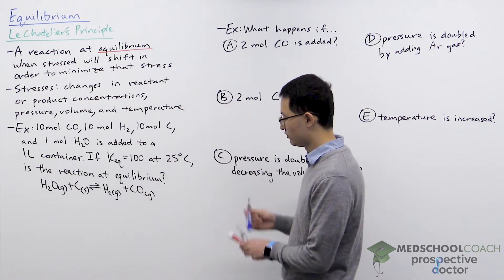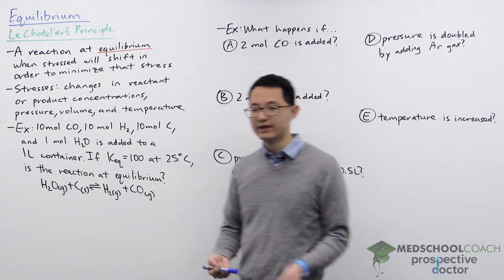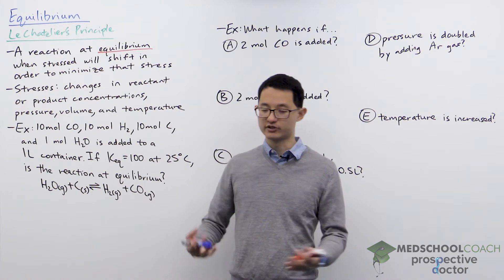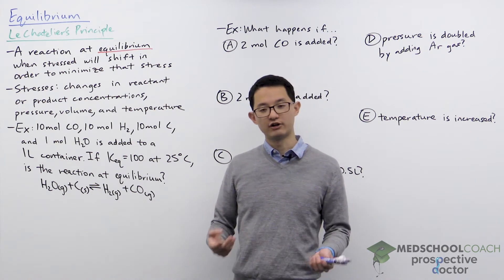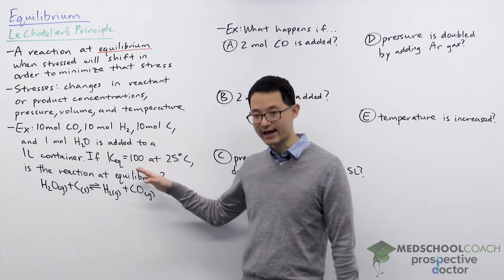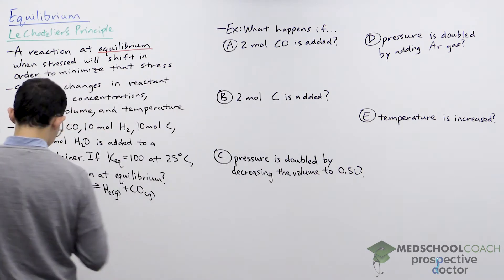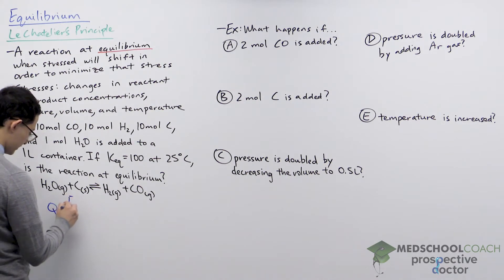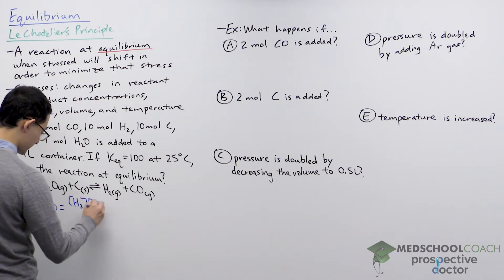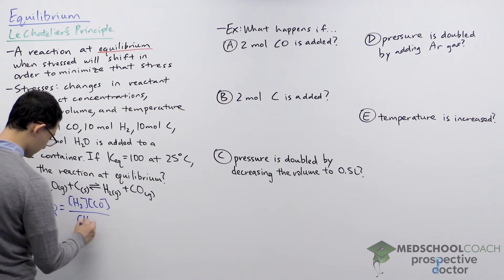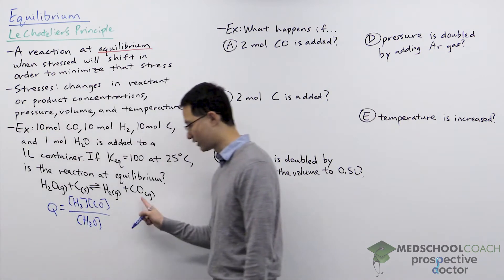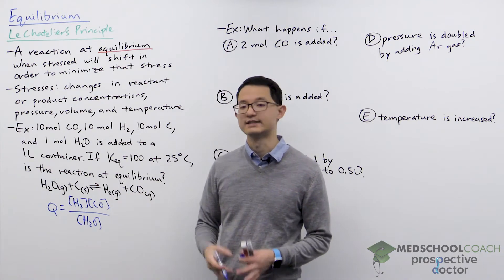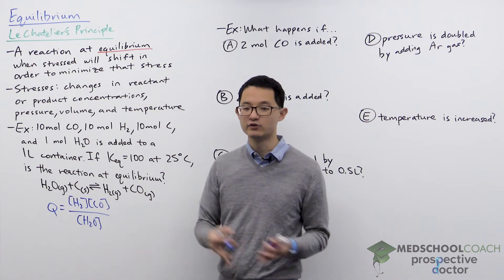To figure out if our reaction is at equilibrium, we need to determine if the reaction quotient Q is equal to K — in other words, is the current ratio of products to reactants the same as at equilibrium? To write out the expression for Q, it's products over reactants, excluding solids or liquids, with stoichiometric coefficients becoming exponents. So our expression for Q has products over reactants, and we've ignored carbon because carbon is a solid and is not included in the expression for Q or K.